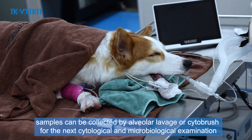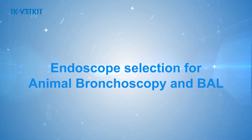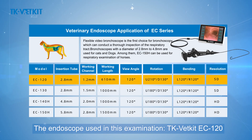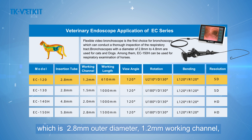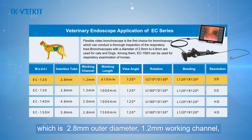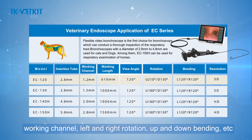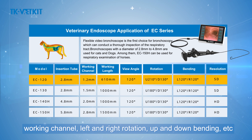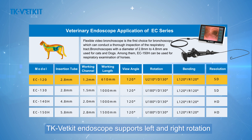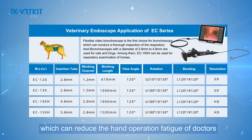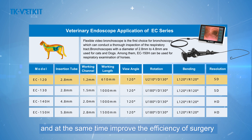Scope selection for animal bronchoscopy: the endoscope used is the TK VetGet EC 120, which has a 2.8 mm outer diameter, 1.2 mm working channel, and 610 mm working length. It features a suction channel, working channel, left and right rotation, and up and down bending. The left and right rotation function reduces hand fatigue and improves surgical efficiency and success rate.